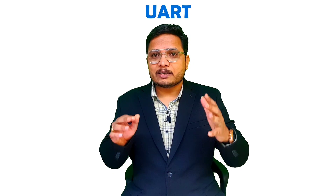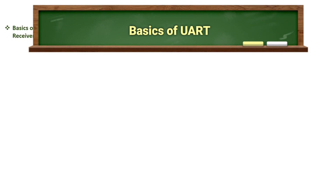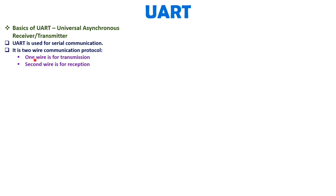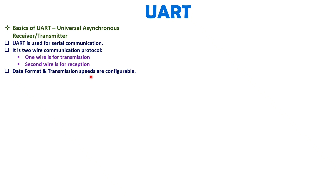UART is a universal asynchronous receiver transmitter protocol used for serial communication, and it can be established using only two wires. One wire is used for transmission and the second wire is used for reception. Data format and transmission speeds are configurable, so before you start communication, you need to define the data format and transmission speed.